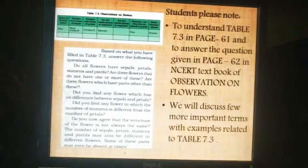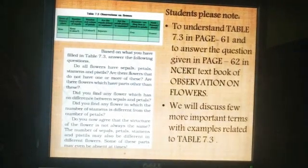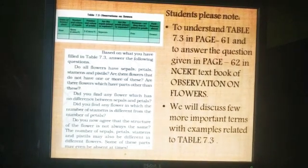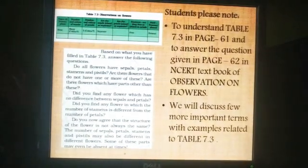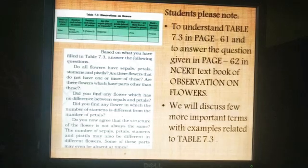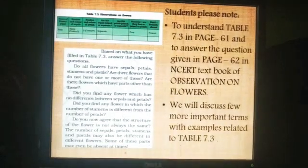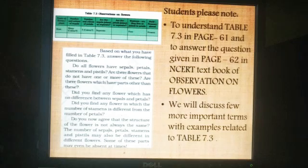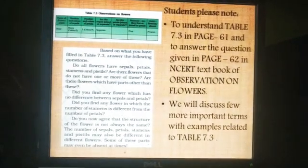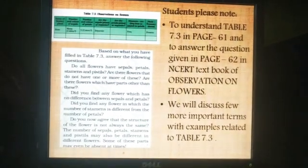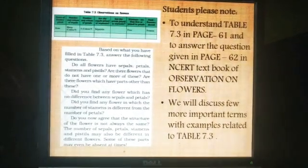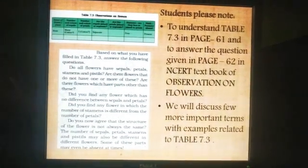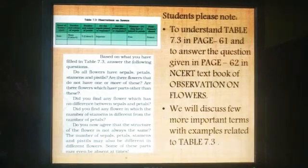Before we conclude the chapter, for the students' better understanding of table 7.3 on page 61 in the NCERT textbook, and also to answer the questions given on page 62 about observations on flowers, we will discuss a few more important terms with examples related to table 7.3.